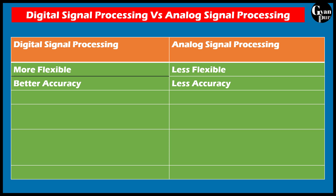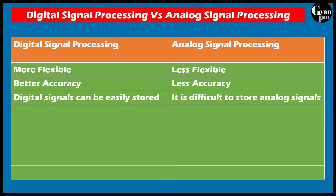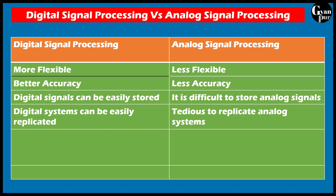Accuracy is more in DSP and ASP is less accurate as compared to DSP. We can easily store the digital signals, but it is difficult to store the analog signals.